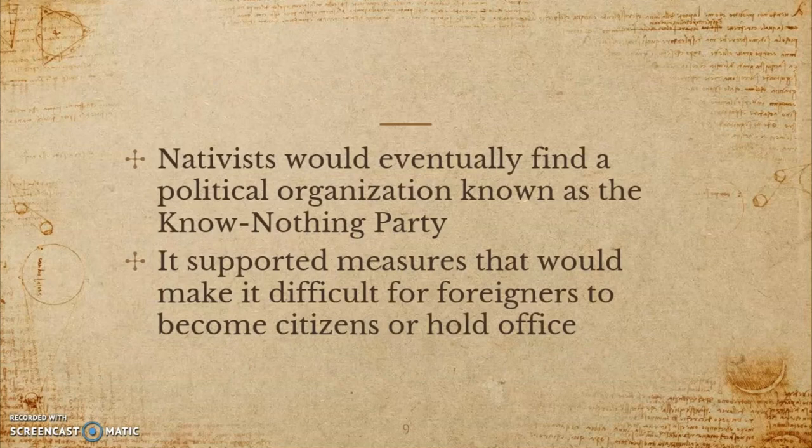As a result, a new party formed by nativists called the Know Nothing Party. Much of the Know Nothing Party's political goals focused on making it difficult for foreigners to become citizens or hold office. Even though the party had some success getting elected in the 1850s, it eventually fell apart due to disagreements over the issue of slavery.